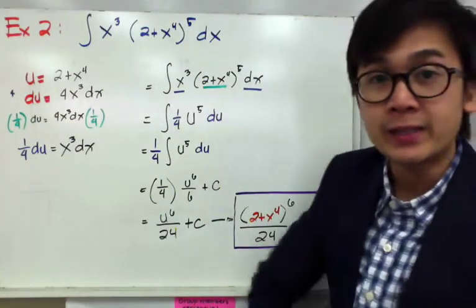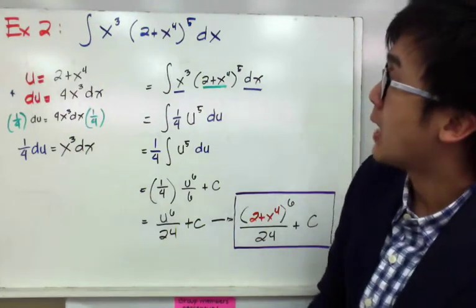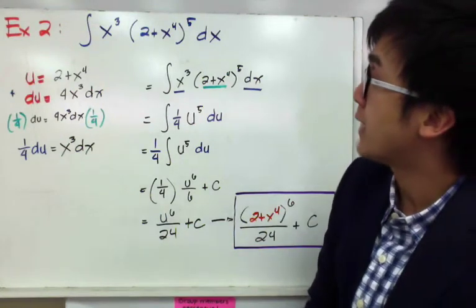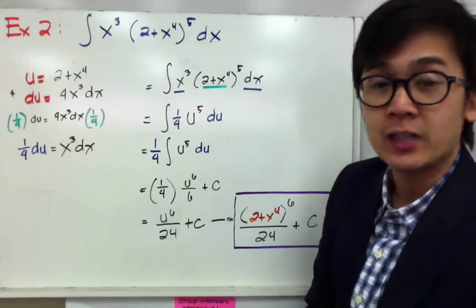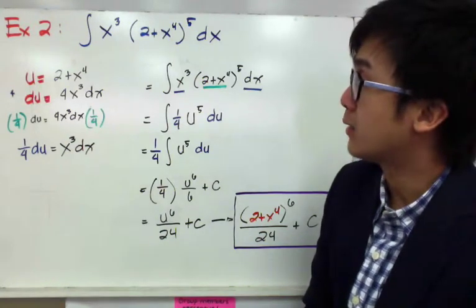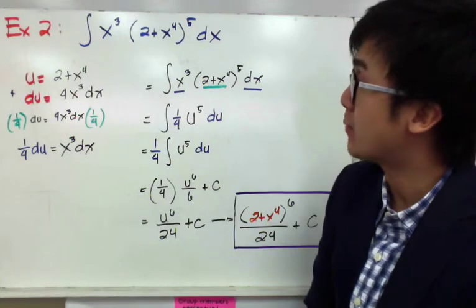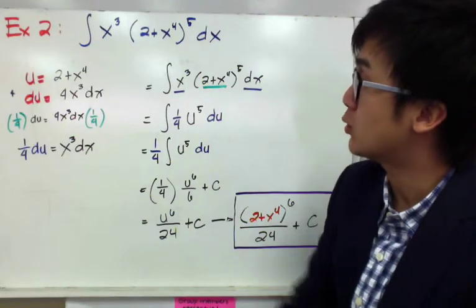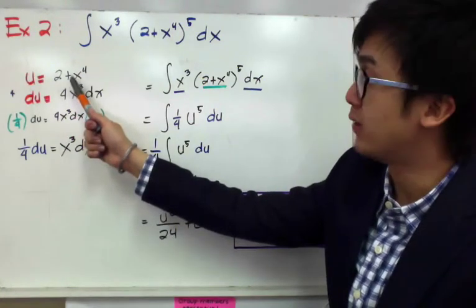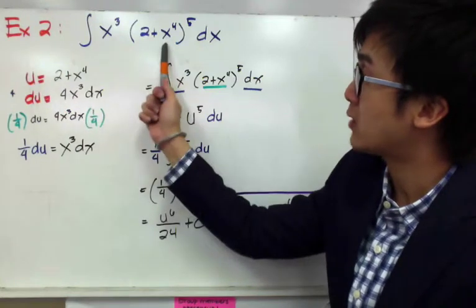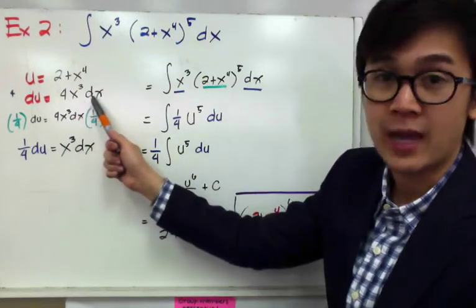In our second example, we have the integral of x cubed times (2 plus x to the fourth) raised to the fifth power dx. Just like in example one, we use the term inside the parentheses — which is 2 plus x to the fourth — and take its derivative. So u equals 2 plus x to the fourth, and du equals 4x cubed dx.